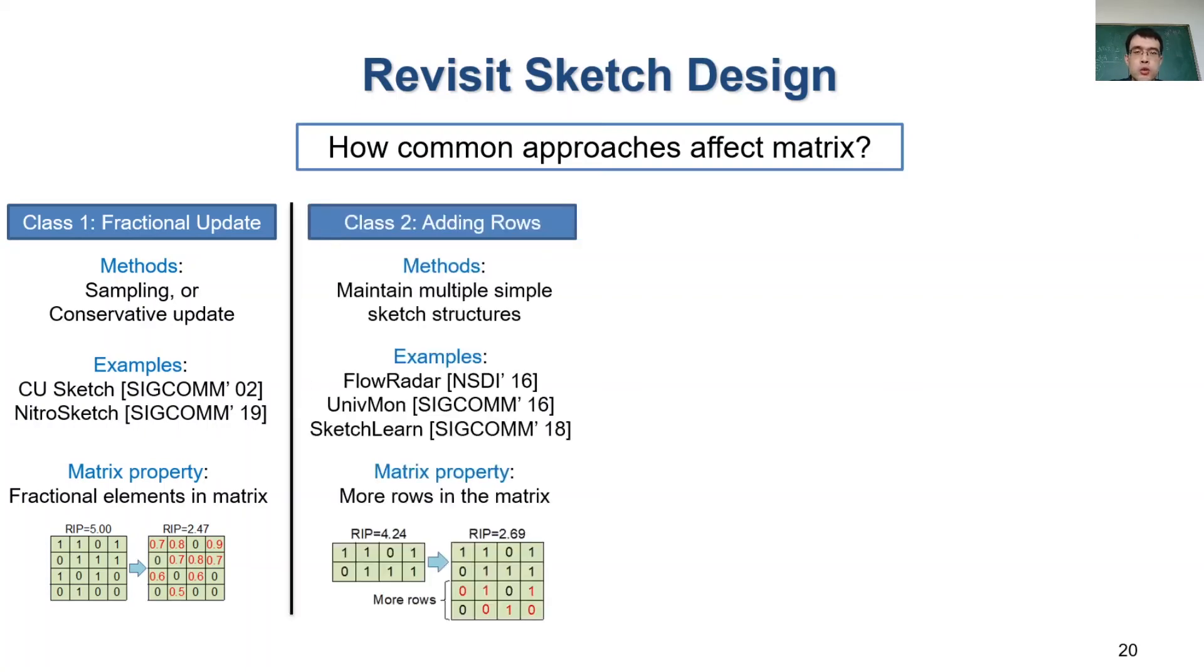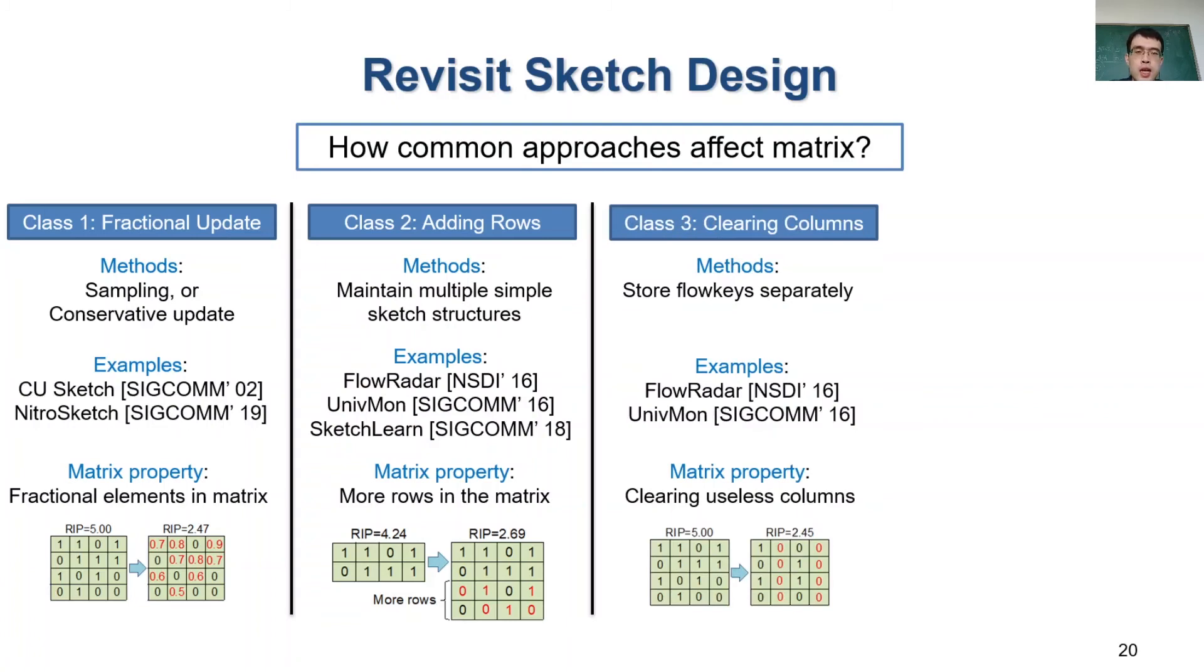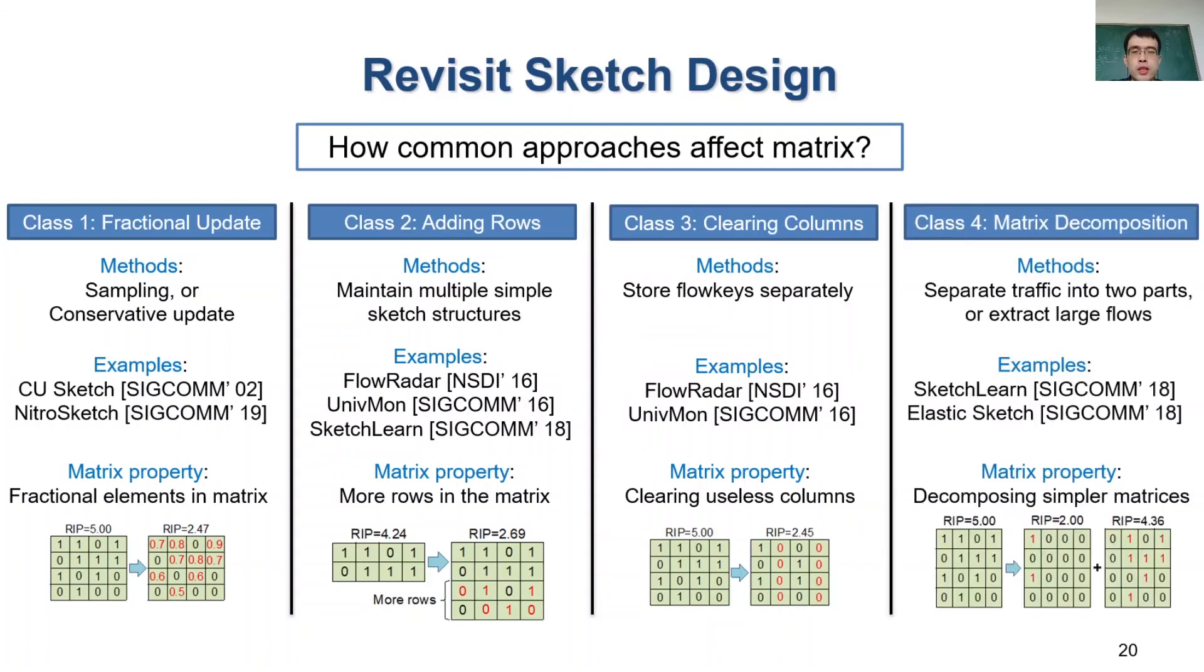The second category is to build a complicated sketch with multiple simple sketch structures. From a perspective of sensing matrix, they essentially add more rows to the sensing matrix. The third class is to maintain flow keys outside the sketch structure. Recall that each column in the sensing matrix corresponds to one flow. So if we record flow keys, we can drop useless columns if the corresponding flow keys do not appear.